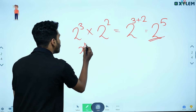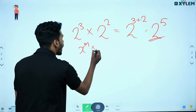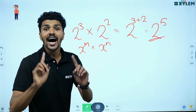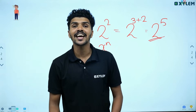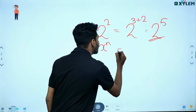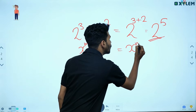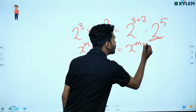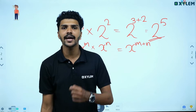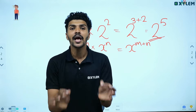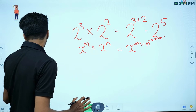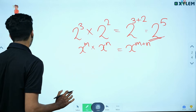In general, x raised to m multiplied by x raised to n equals x raised to m plus n. That is the rule for multiplying powers with the same base.